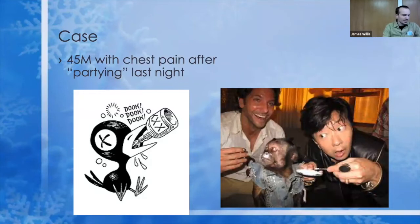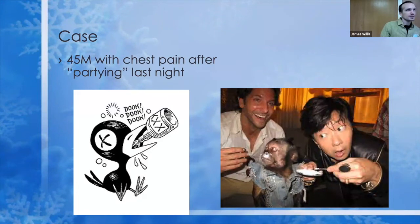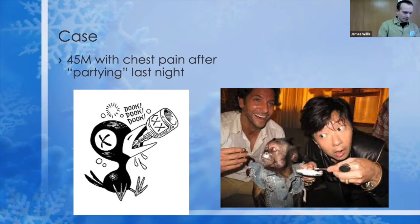You want an EKG — we'll get to that on the next slide. Do you want to put this patient on a monitor? Yes. Would you want some labs? What's one lab you might want specifically for a patient with chest pain? Do you want a tox screen? This might be a patient where a tox screen is valuable depending on the history. If they tell you they were doing cocaine and drinking, you might not need the tox screen specifically, but it could help with medication decisions down the line.